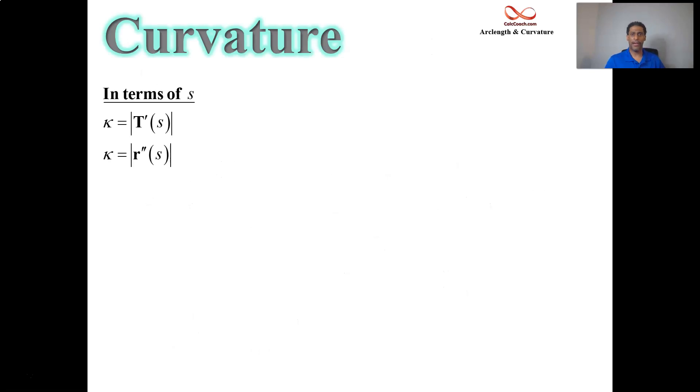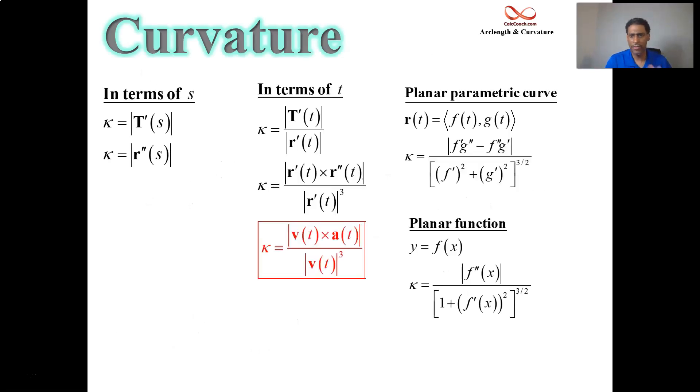Okay, great. So we have all our formulas that we need, throw them on a cheat sheet. Somebody asked you about curvature, and most often it's going to be the red formula that you have there because you'll be given a function of time. But if it's 2D, you can use either of the ones in the third column there. All right.